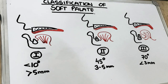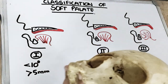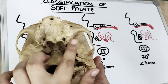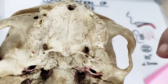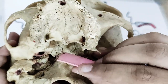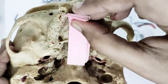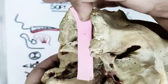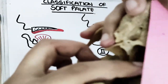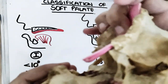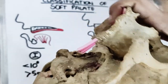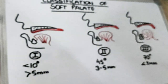So how are we going to classify the soft palate? First of all, we need to understand what the soft palate is. This is a skull. As you can see, this part is our hard palate. So whatever mucosal covering is there after the hard palate is our soft palate. The angle that the soft palate makes after the hard palate is the basis for its classification.